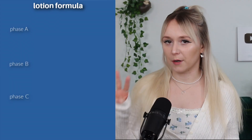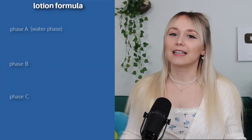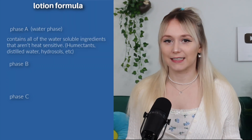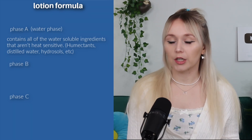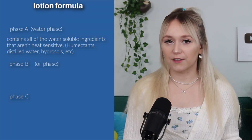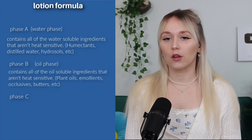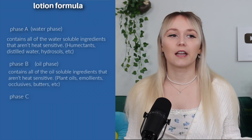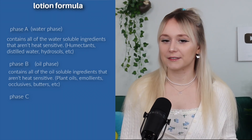A lotion formula is typically broken up into three parts. The water phase, or sometimes called phase A, contains all of the water soluble ingredients that aren't heat sensitive — so this could be humectants, distilled water, hydrosols. And then the oil phase, which can also be considered phase B, contains all of the oil soluble ingredients that aren't heat sensitive, like butters, your plant oils, some emollient esters, and occlusives.